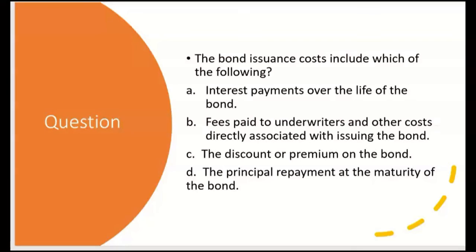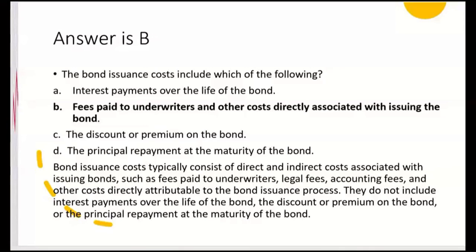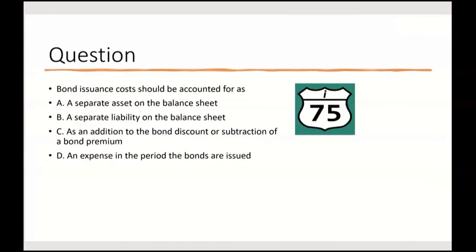Multiple choice: bond issuance costs include which of the following? A — interest payments over the life of the bond: no, those happen whether or not there are issuance costs. B — fees paid to underwriters and other costs directly associated with issuing the bond: yes, that's correct. C — the discount or premium on the bond: no, though bond issuance costs are combined with the discount or premium. D — the principal repayment at maturity: no. Answer is B. Bond issuance costs typically consist of direct costs such as underwriter fees, legal fees, accounting fees, and registration fees.